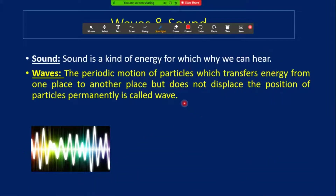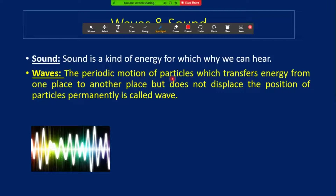Now, what is a wave? Sound is one kind of wave and is a form of energy that creates a sensation of hearing. Wave: the periodic motion of particles which transfers energy from one place to another, but these particles do not change their own position. Such a type of motion is called a wave.